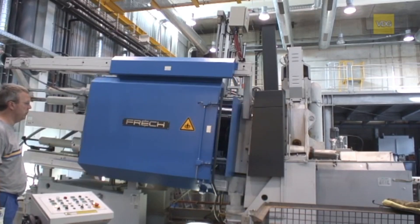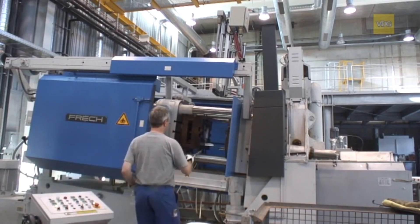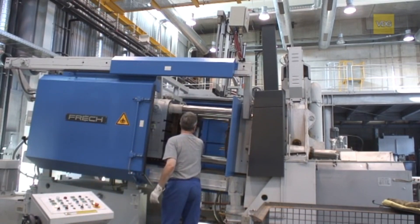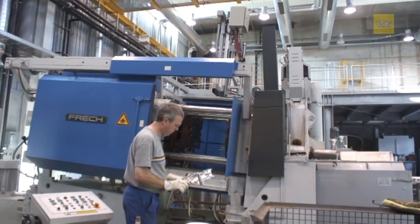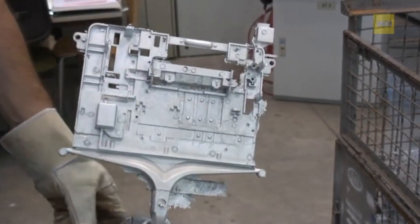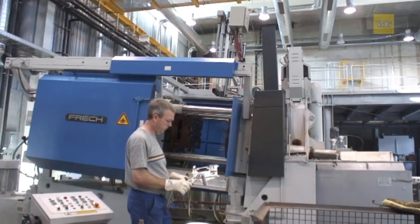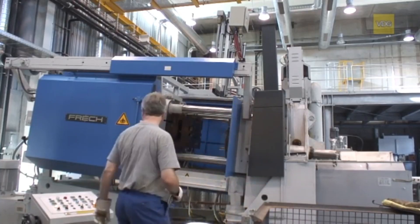After solidification, the machine opens the die-casting mold, and the foundry worker can remove the casting, inspect its quality, and transfer it to the measurement room. The clamping force of the demonstrated hot-chamber high-pressure die-casting machine is 1.6 MN.